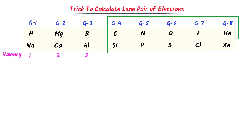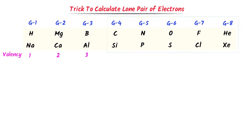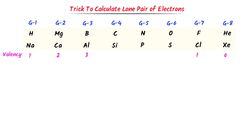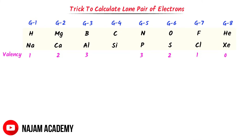On the other hand, group 4, group 5, group 6, group 7, and group 8 elements are non-metals. I subtract their group number from 8. For example: 8−8=0, 8−7=1, 8−6=2, 8−5=3, 8−4=4. So these are the valencies of non-metals. Remember the group number and valency of these elements.